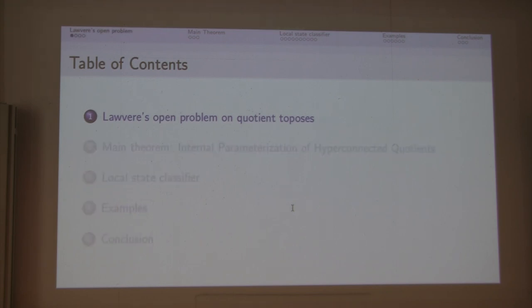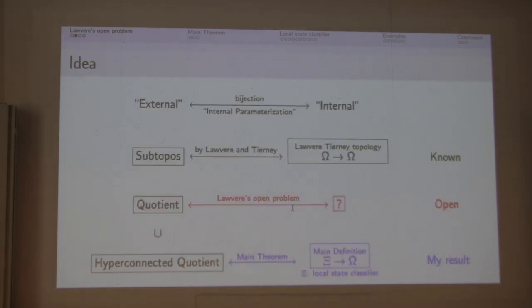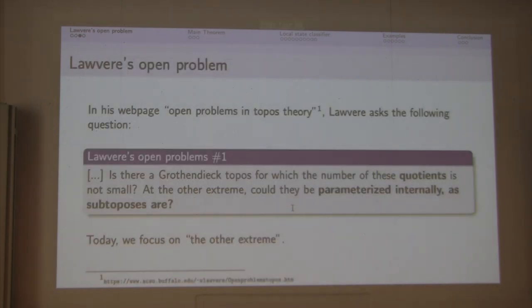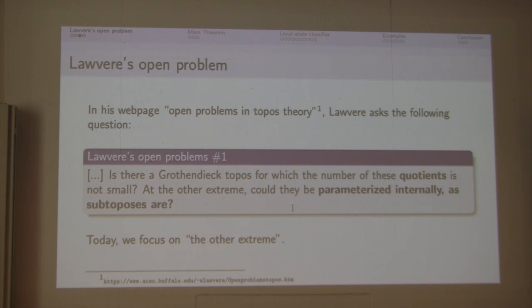I will talk about Lawvere's open program, but very briefly. Let me turn back to this slide. From now I will talk about these two parts — known and open parts. In his webpage 'Open Programs in Topos Theory,' Lawvere asked the following question: is there a Grothendieck topos for which the number of quotients is not small? At the other extreme, could they be parameterized internally as some topos? This is the open program.